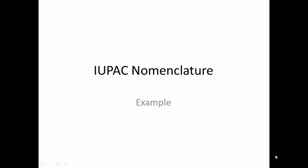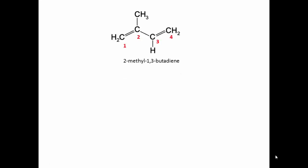Let's look at an example of IUPAC nomenclature. The question concerns figure 5 and how the compound is named. In figure 5, the name we have is 2-methyl-1,3-butadiene, and the common name is isoprene.